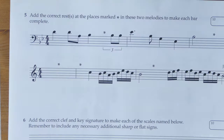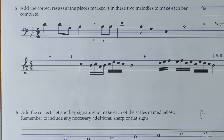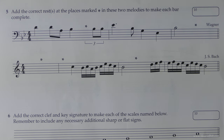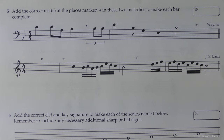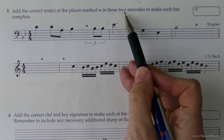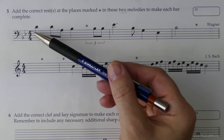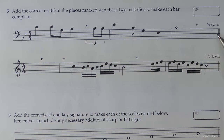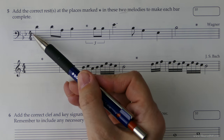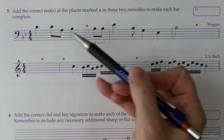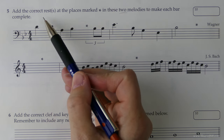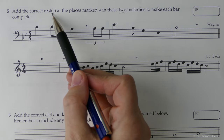So if we turn the page to page four, we're now on question five. Question five is asking us to add rests wherever there's a little star to make each bar complete. Notice it says in these two melodies — so we've got two separate melodies which may have completely different time signatures. In actual fact just by chance they're both four beats per bar, but don't presume they'll carry on and be the same. Each bar needs to add up to four crotchet beats — four quarter notes — but we've got some gaps to fill with the appropriate combination of rest or rests.